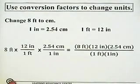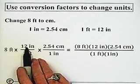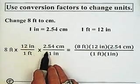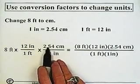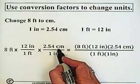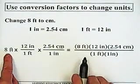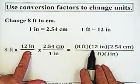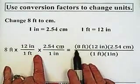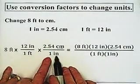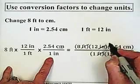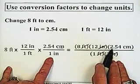So here we have our 8 feet. We're going to multiply it by the conversion factor of 12 inches per foot, so our feet will cancel and we're left with inches. Then we multiply by the conversion factor of 2.54 centimeters per inch, so our inches will cancel and we're left with centimeters. We have 8 feet times 12 inches times 2.54 centimeters, divided by one foot and one inch. Our feet cancel, our inches cancel, and we have 8 times 12 times 2.54 centimeters.